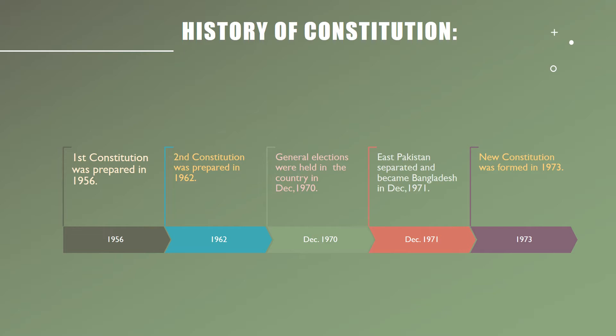Regarding the history of constitutions, students, the Constitution of 1973 is the third constitution. The first Constitution of Pakistan was prepared in 1956, and the second Constitution was prepared in 1962. General elections were held in the country in December 1970. Unfortunately, East Pakistan separated and became Bangladesh in December 1971. After the separation of East Pakistan, a new permanent constitution was framed and promulgated on 14th August 1973.